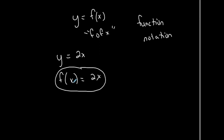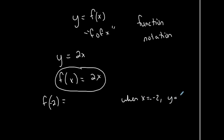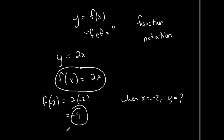I can plot points using function notation. For example, if I'm asked to find f(-2), this is saying for this particular function, for this input, what is the output? In other words, when x is -2, what is y? You replace x with -2 everywhere in the function and simplify: f(-2) = 2(-2) = -4.